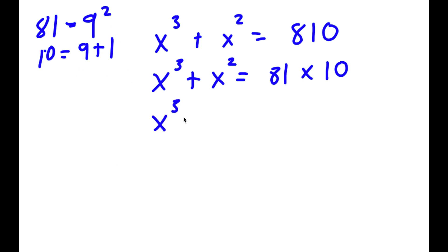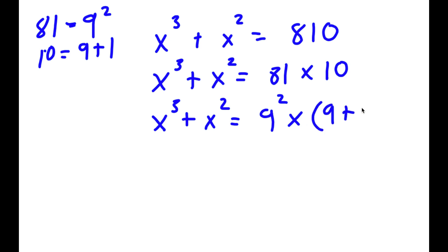So now I have x to the power of 3 plus x squared is equal to 9 squared times parentheses 9 plus 1. What I'm going to do now is distribute the 9 squared and multiply it with 9 plus 1.